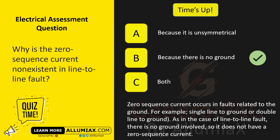Zero-sequence current occurs in faults related to the ground — for example, single line-to-ground or double line-to-ground. In the case of line-to-line fault, there is no ground involved, so it does not have a zero-sequence current.